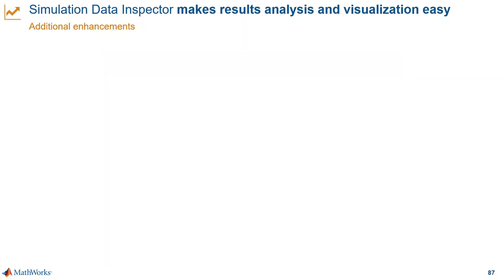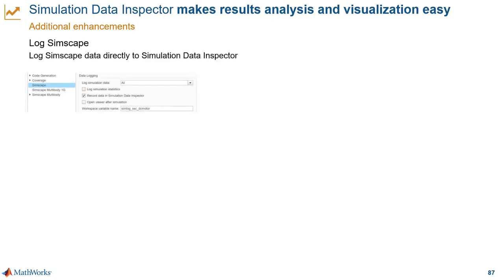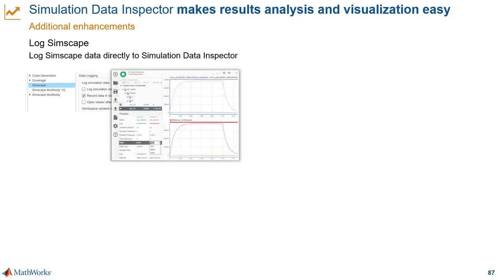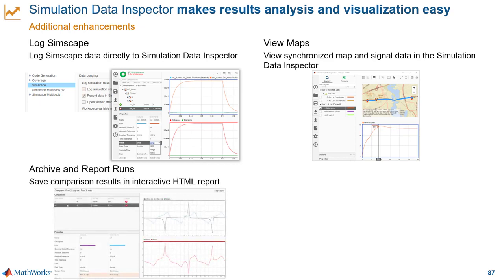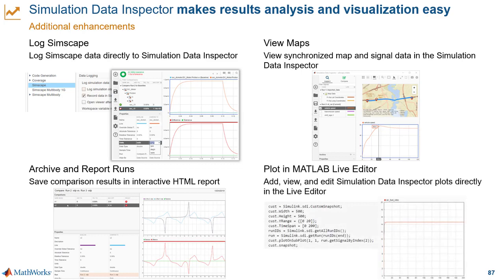What else can you do with Simulation Data Inspector? If you're doing physical modeling, you can stream Simscape variables directly by checking a box in the model settings. If you're working with maps, maybe for automated driving applications, you can use GPS coordinates to display location on a 2D map and synchronize the position on the map with the simulation data — the path history is preserved on the map. Plots in the data inspector automatically update to show the current run, and previous runs are grouped in an archive section. It's easy to save comparison results in an HTML report, and if you're using the Live Editor in MATLAB, you can capture snapshots with just a few lines of MATLAB code.